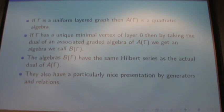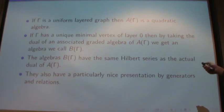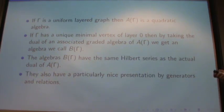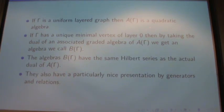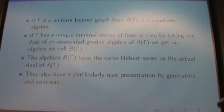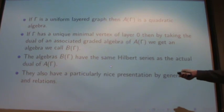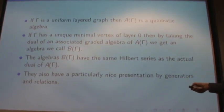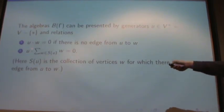If gamma is a uniform layered graph, then A_gamma is a quadratic algebra — this is why uniformity is important. If gamma has a unique minimal vertex of layer zero, then by taking the associated graded algebra (picking out the unpleasant parts and making it easier) and then taking the dual, we get a really pretty algebra called B_gamma. The algebras B_gamma have the same Hilbert series as the actual dual of A_gamma and have very nice relations: generators are the vertices above that minimal vertex, and u times w is zero if there's no edge from u to w, and u times the sum of all vertices below it is zero.